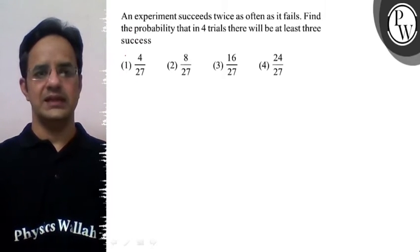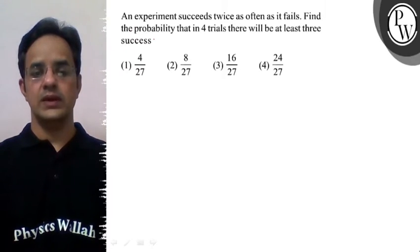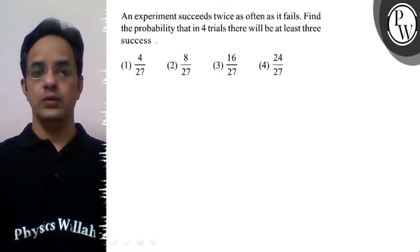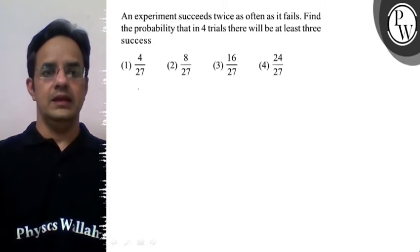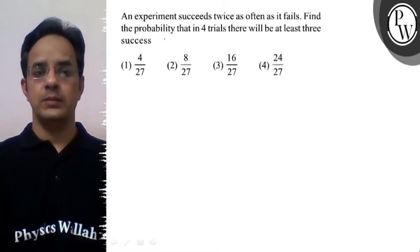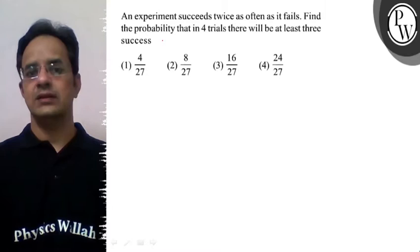Hello everyone, the problem states: an experiment succeeds twice as often as it fails. Find the probability that in 4 tries there will be at least three successes. Now here, given that the probability of success is twice that of the failure.